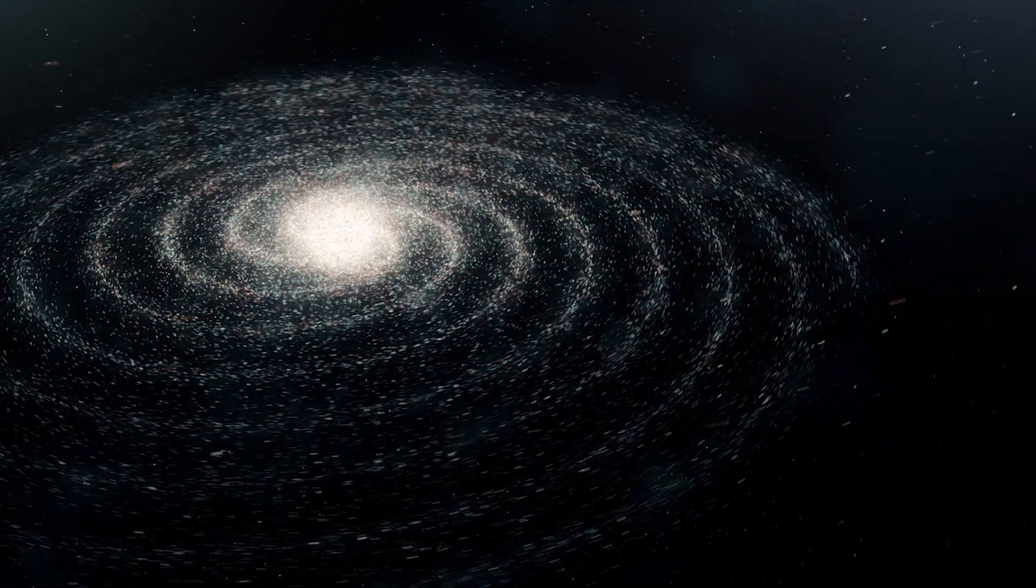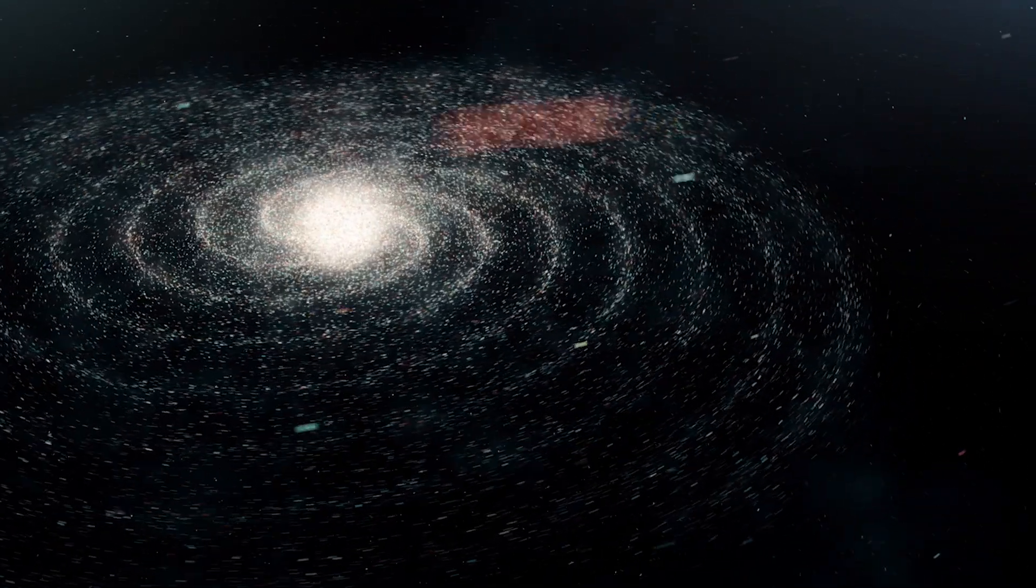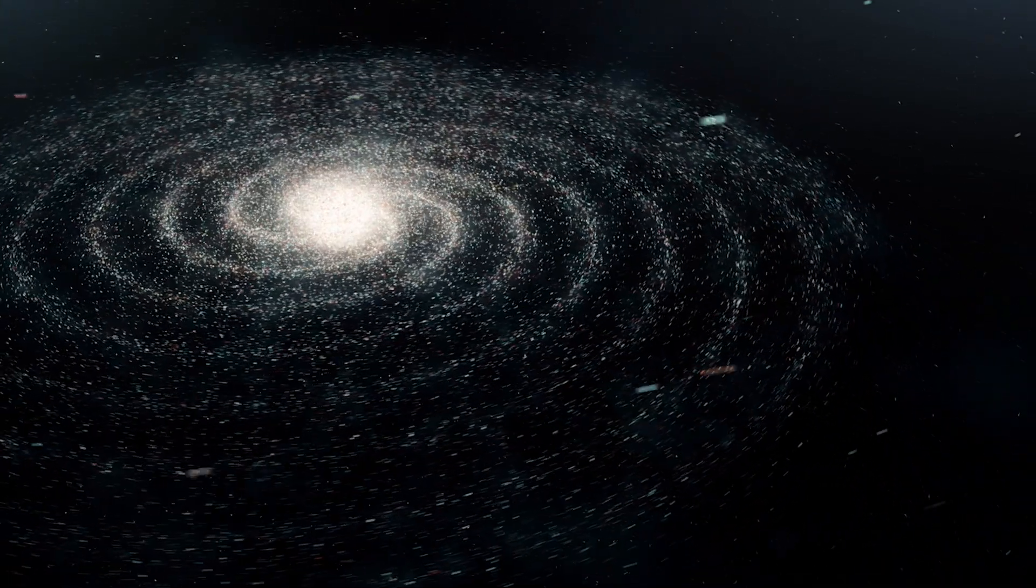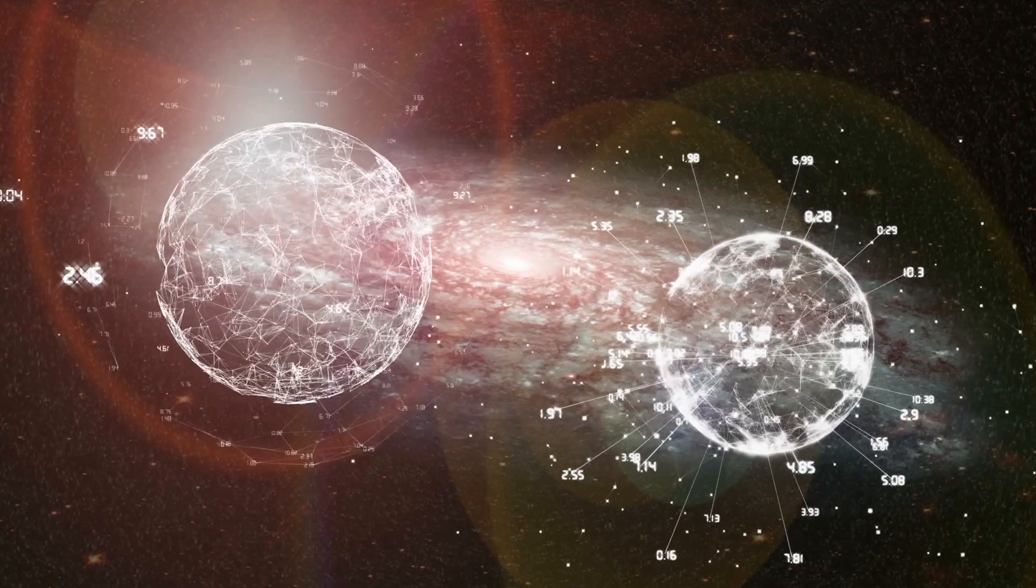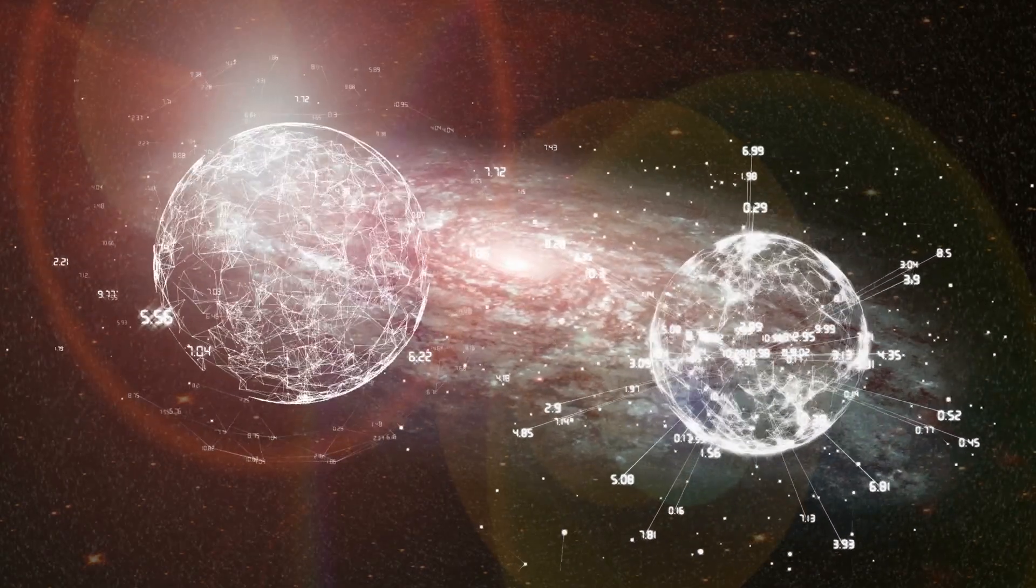That might sound like a tiny detail, but it's actually significant. If the universe began in perfect balance, logic says half the galaxies would spin in one way, and half the other. This small tilt might mean the universe did begin with some initial rotation, and that could change a lot.